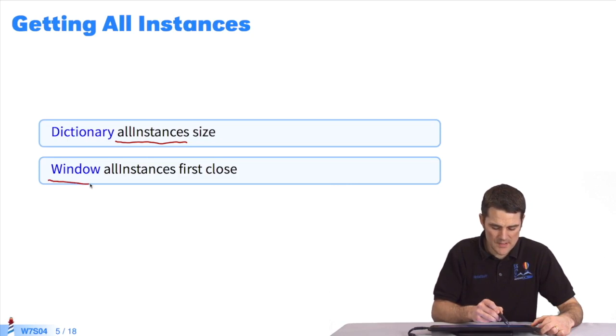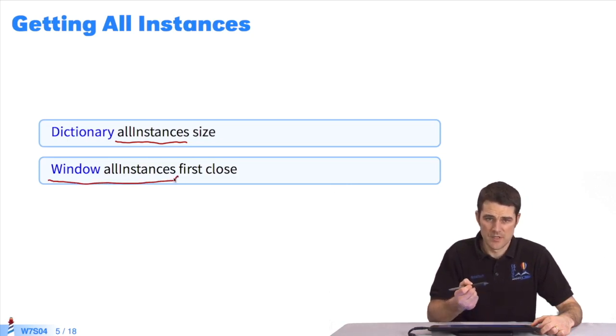If we send it to Window class, we get a collection of window objects. We can retrieve the first element and send a close message, since the close method is defined in the window class.